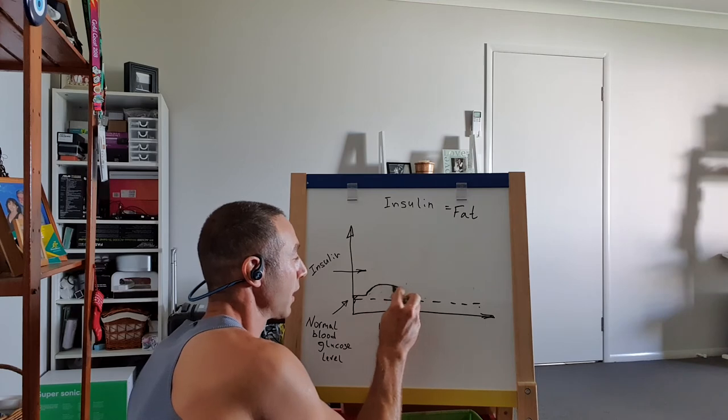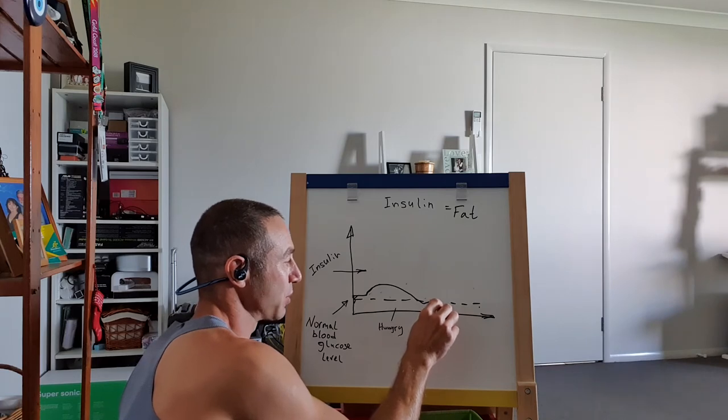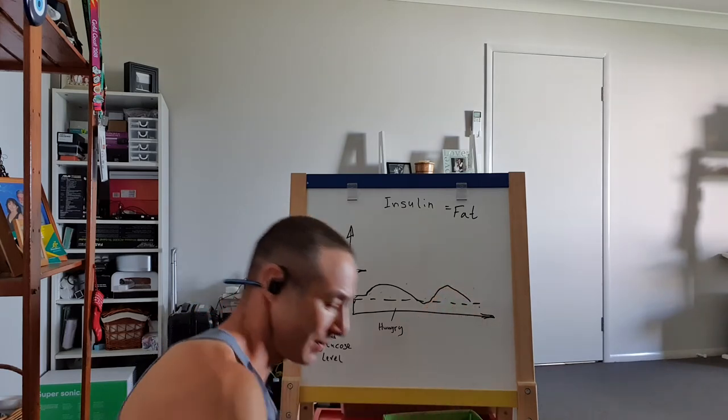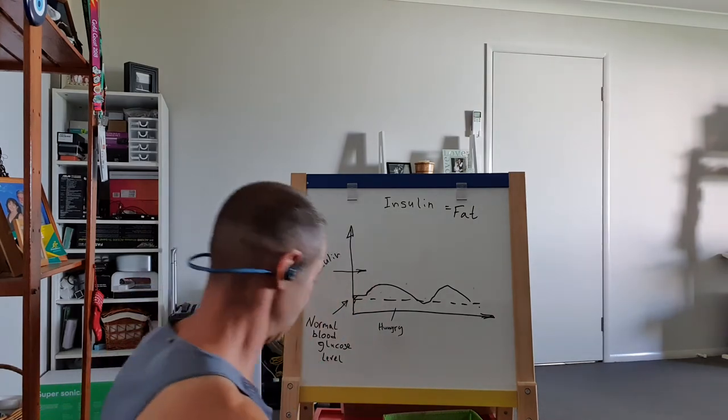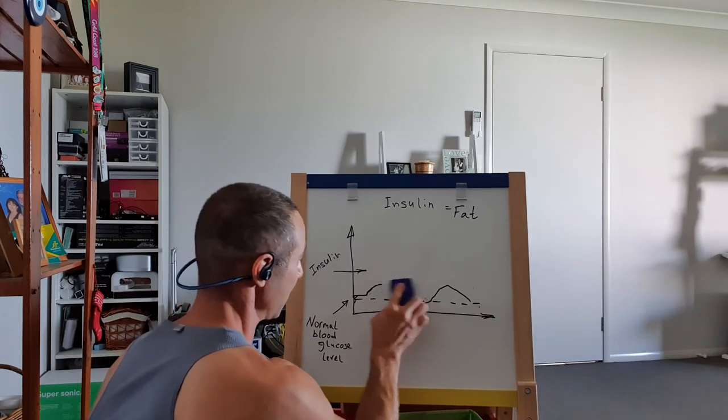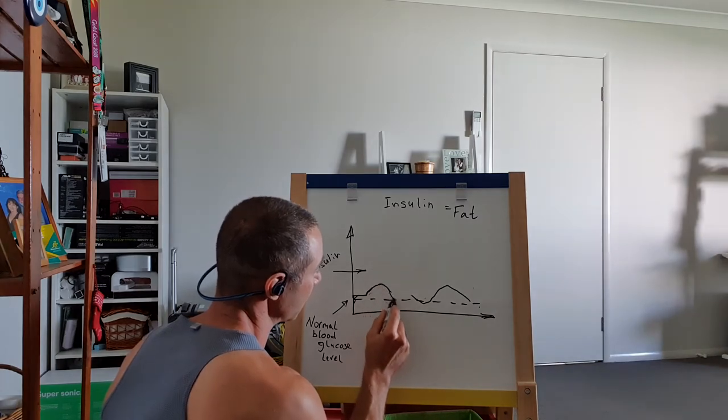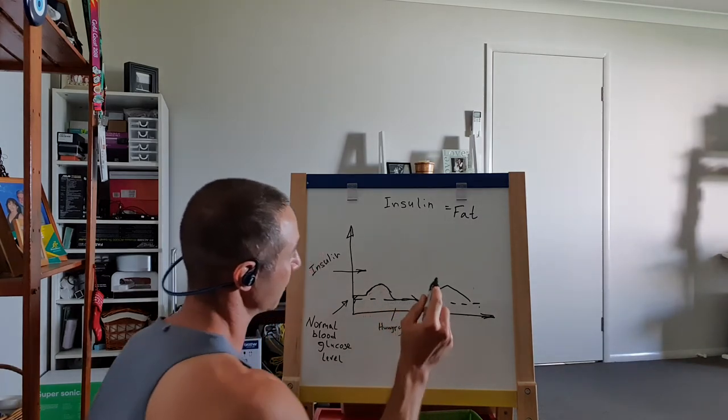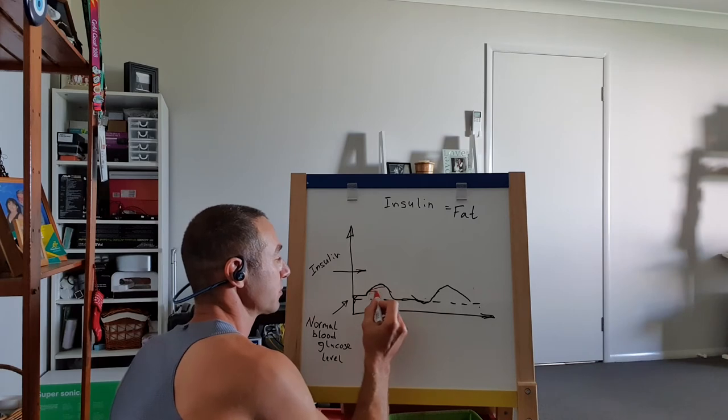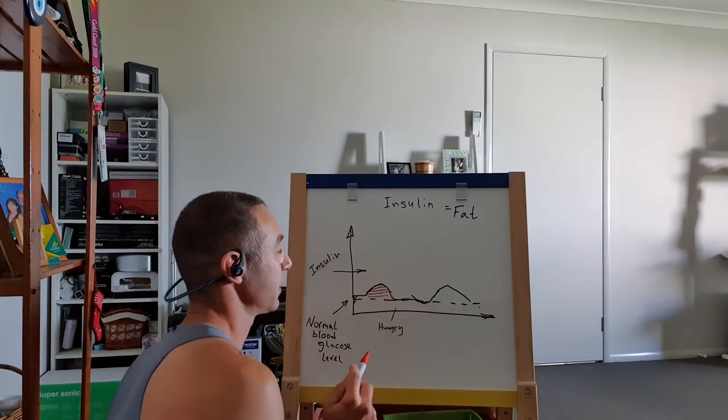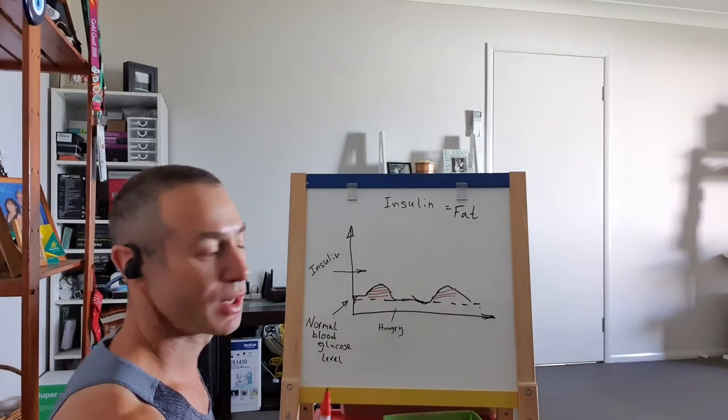And if your lunch is mostly protein, and same with dinner, what will happen? Sorry, I'll quickly, I'm not good at drawing, but because the spike won't be as big, it will quickly go down and stabilize, and then another one. So the moment that you possibly can store fat, it's only here, and it's very small time compared to previous one, not as high as well.